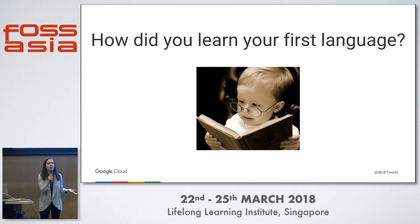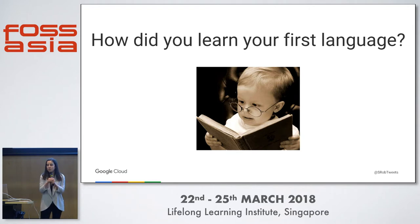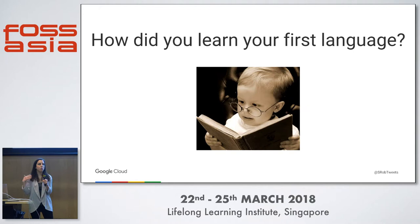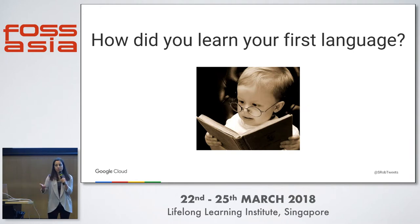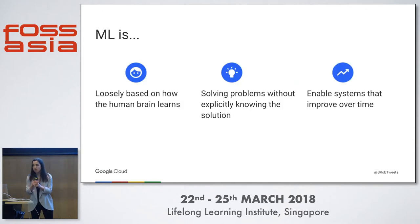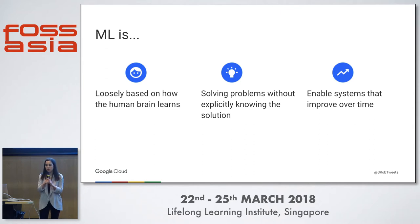Your parents probably didn't give you a dictionary and a bunch of grammar books to memorize — that'd be kind of weird. Instead, you learned over time by being exposed to many different examples. So let's say the first time you had pasta for dinner, you saw it on your plate, you heard your parents identify it, maybe you identified it incorrectly a couple times, but over time this repetition strengthens certain pathways in your brain. So the next time you had it for dinner, you were able to identify it correctly. This is roughly how machine learning works too — it's loosely based on how the human brain learns.